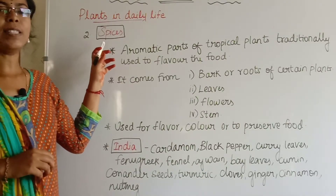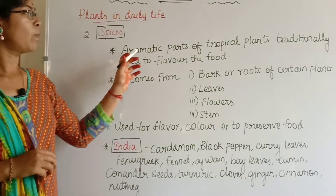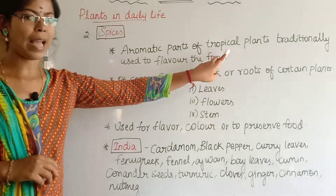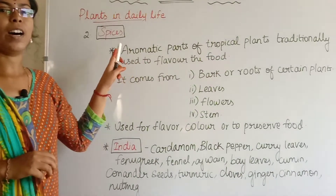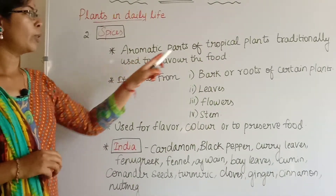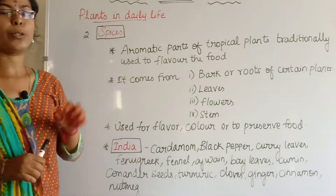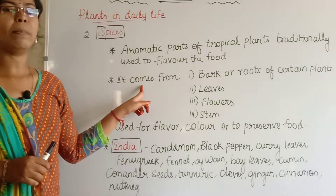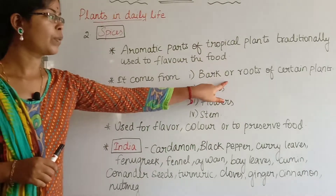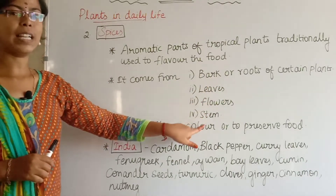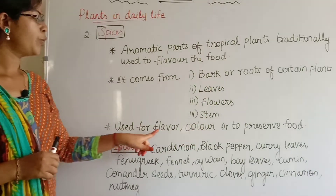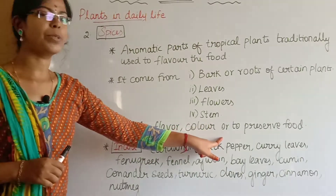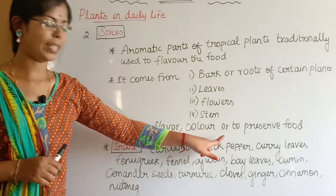The second category is spices (masala). Spices are the aromatic parts of tropical plants used to add flavor, color and to preserve food. They come from bark, roots, leaves, flowers and stem of certain plants.